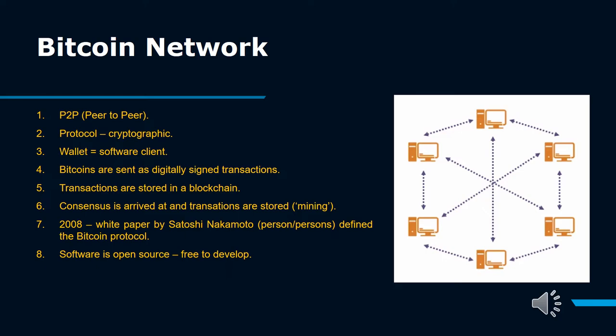Satoshi Nakamoto, the designer of Bitcoin, claimed that the design and coding of Bitcoin began in 2007. In 2008, a white paper by Satoshi Nakamoto defined the Bitcoin protocol. The project was released in 2009 as open-source software.